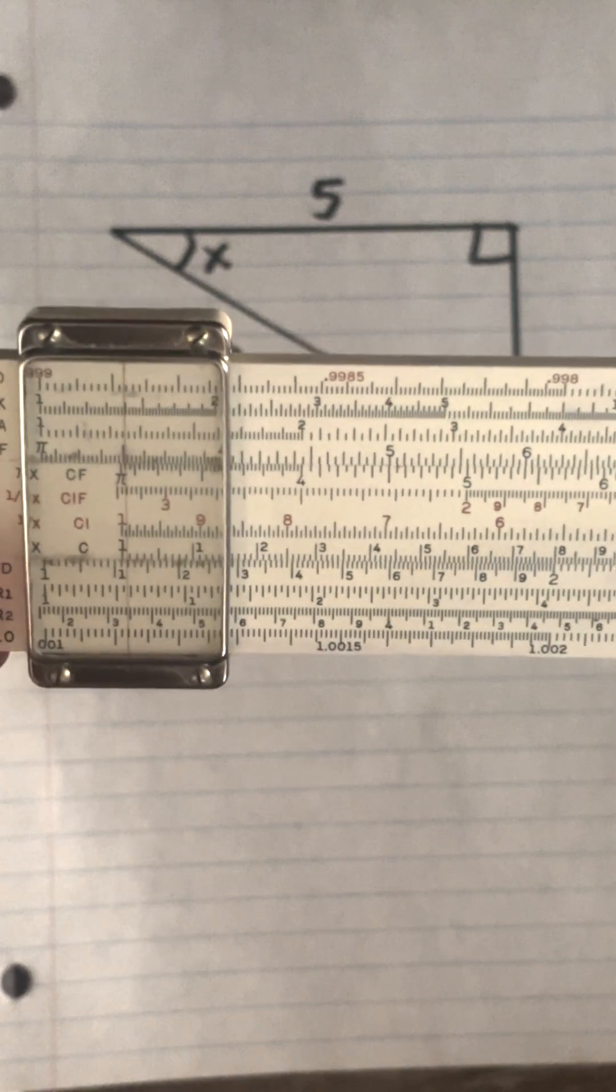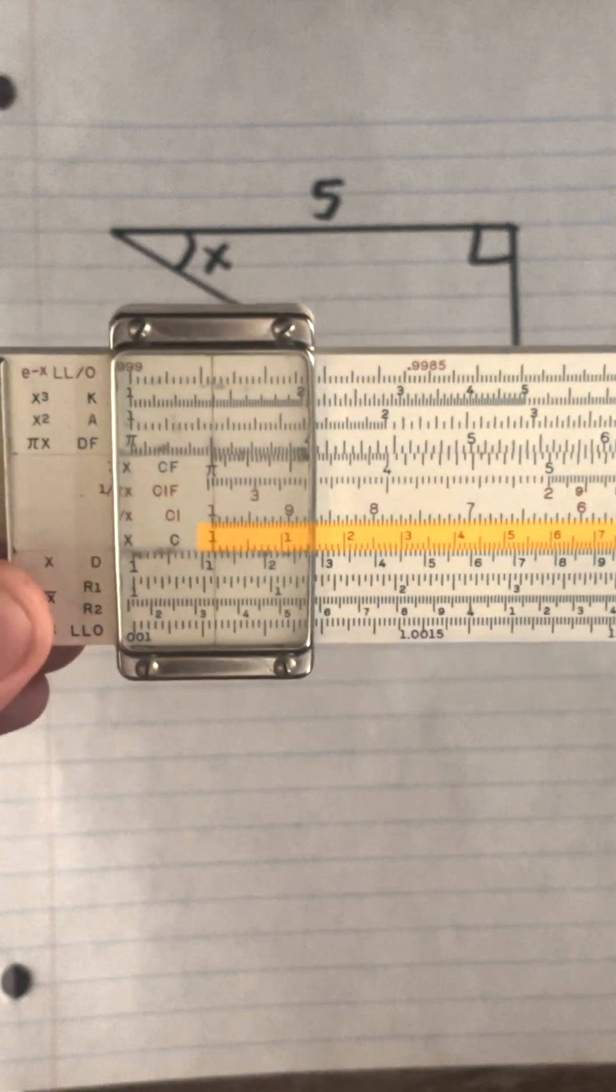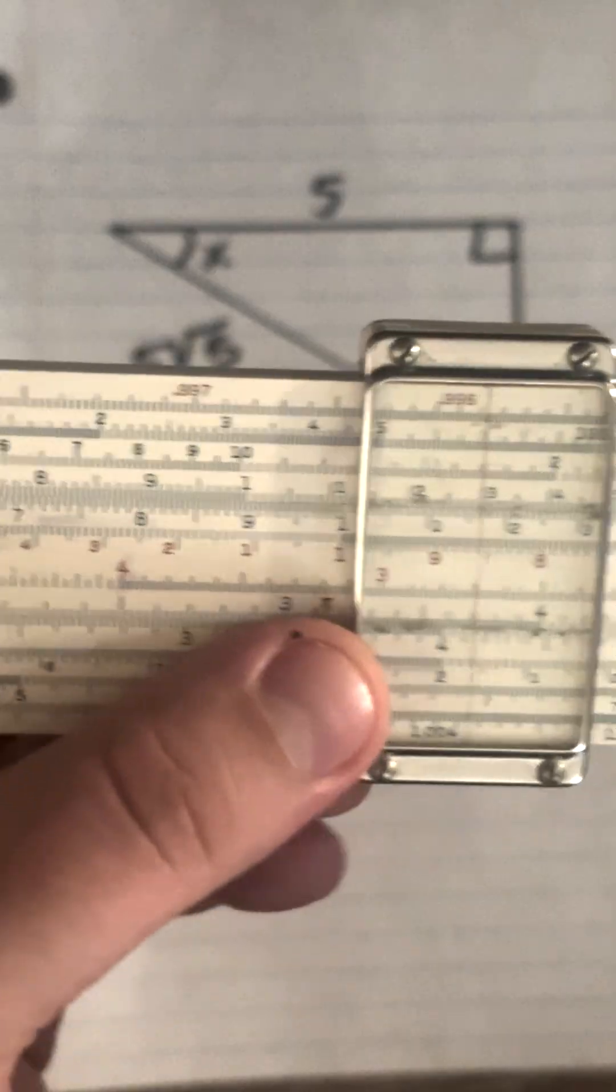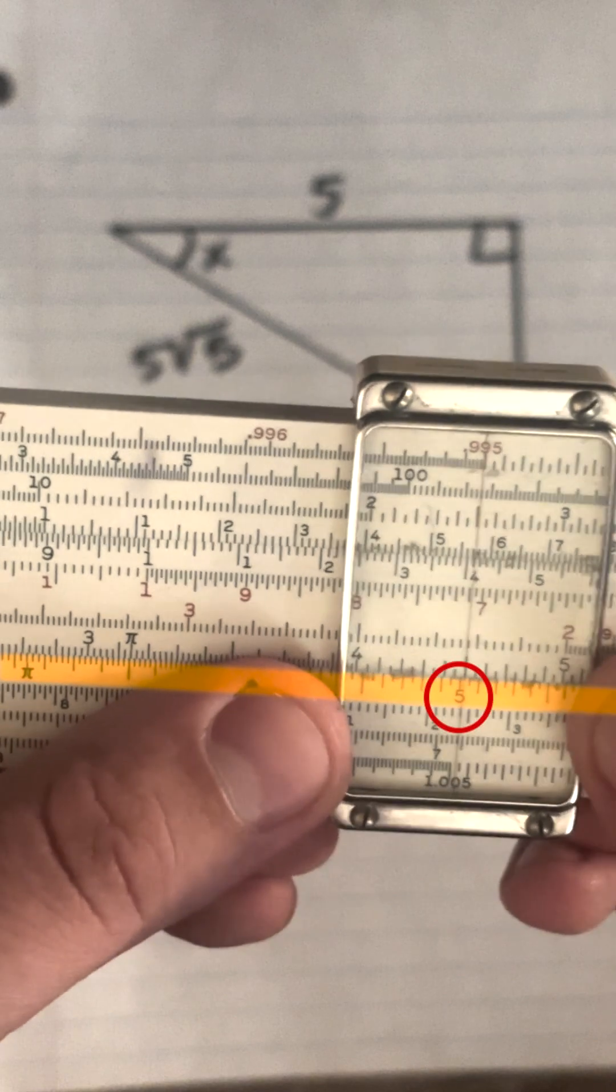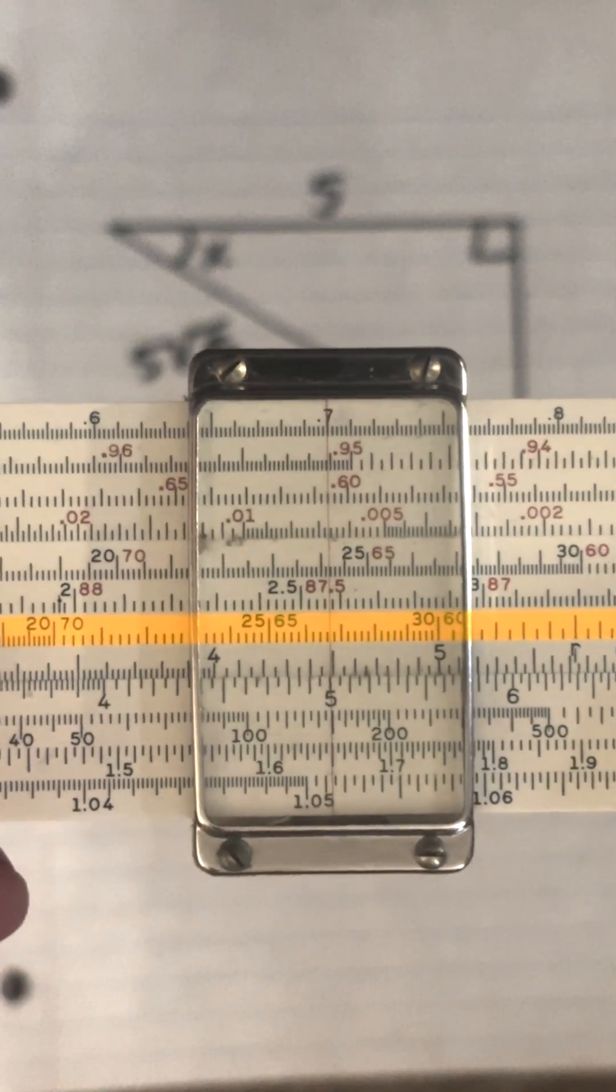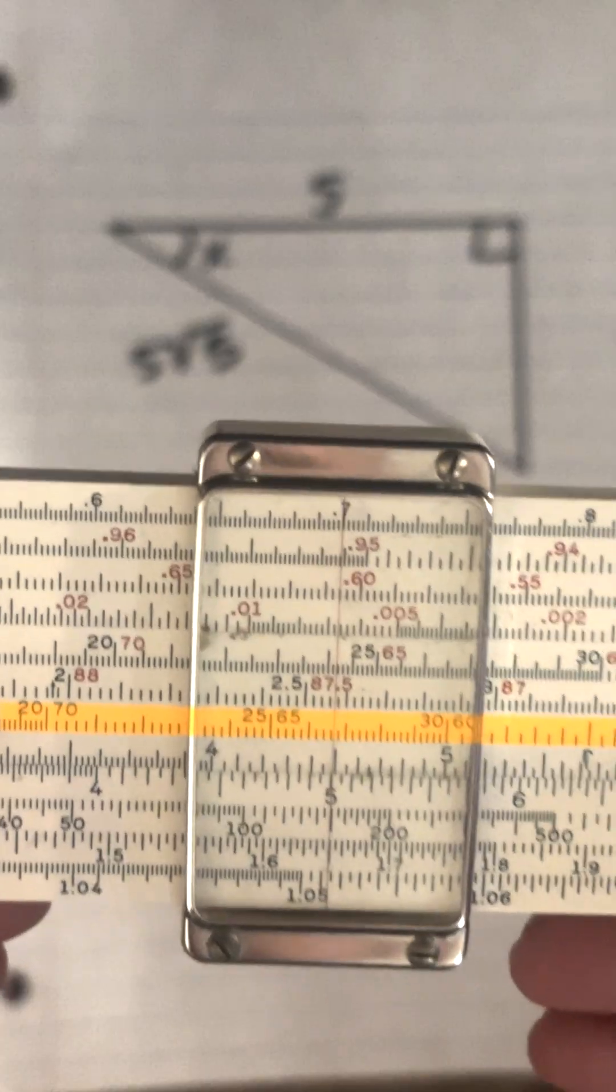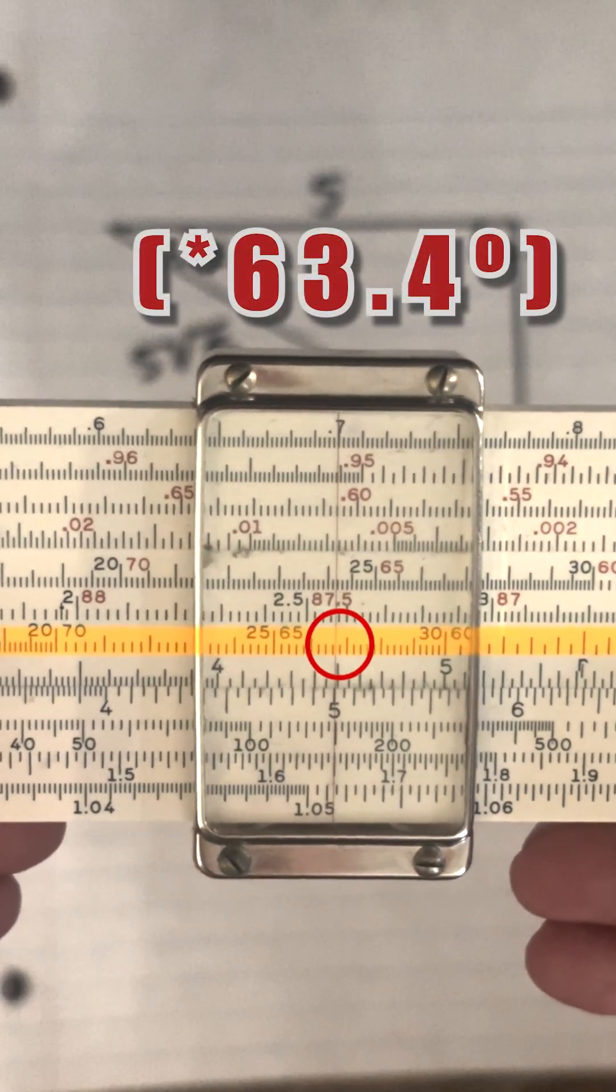So a quick way to do that is to put the left index on 11.2 right there, and on the d scale, we will move over to 5. And because we did everything on the d scale, now we can just flip over to the cosine scale without moving the slide back. We are at 63.2 degrees.